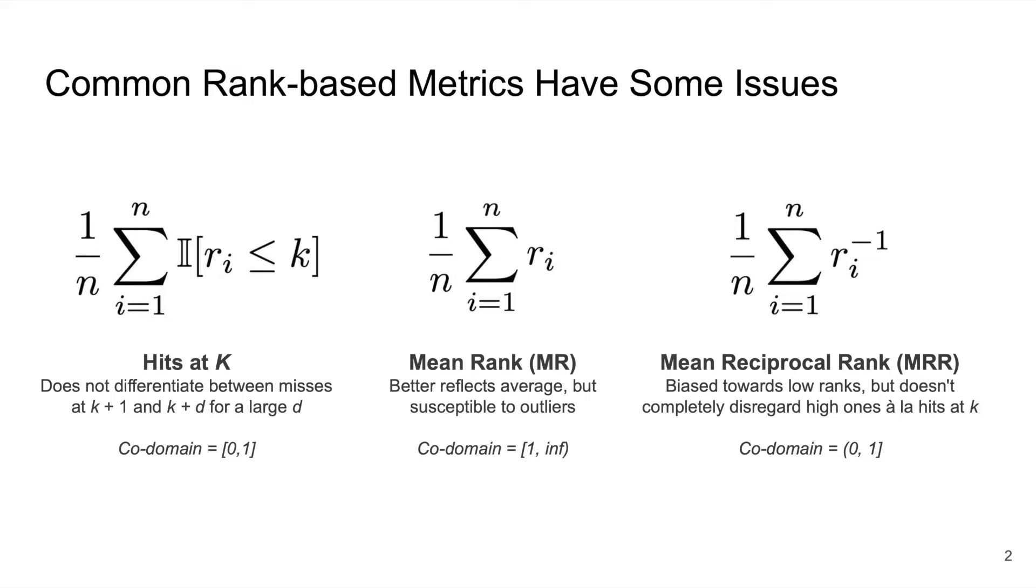The three most common summary statistics of these rankings are the hits at k, mean rank, and mean reciprocal rank. The hits at k is the average number of ranks that are lower than k, which is useful in situations like showing the top k results of a search.